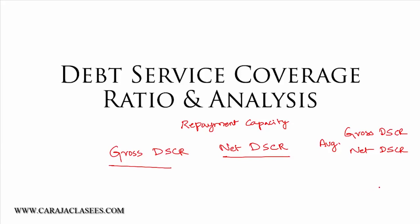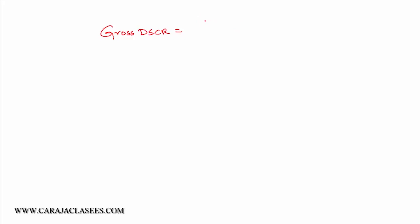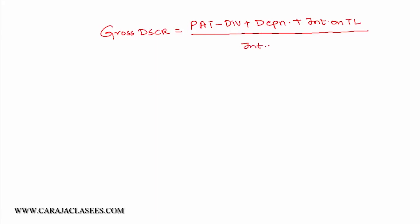When we say gross DSCR, we are going to consider the gross cash flows available for servicing the total repayment obligation. We can say gross cash accruals. Gross cash accruals is PAT minus dividend plus depreciation plus interest on term loan, all divided by interest on term loan plus principal repayment. This makes gross DSCR.